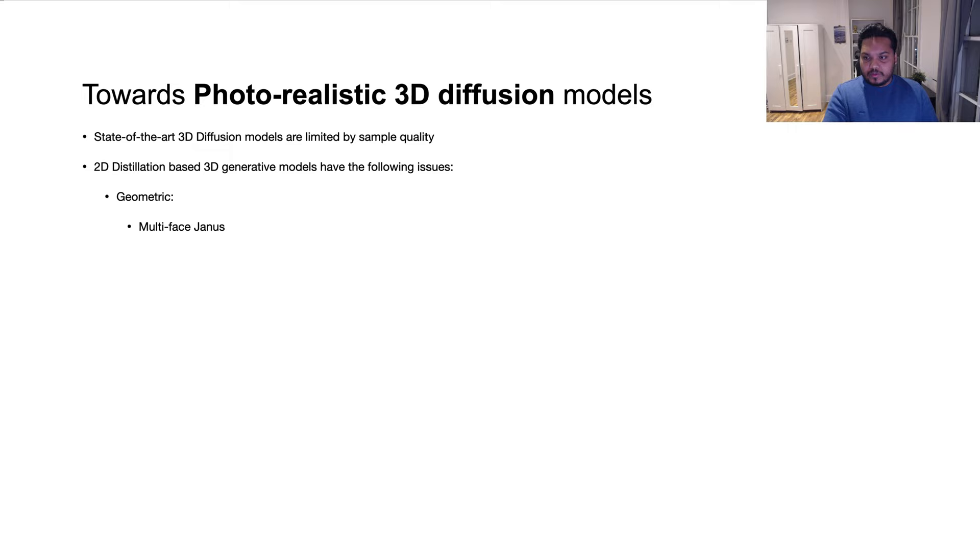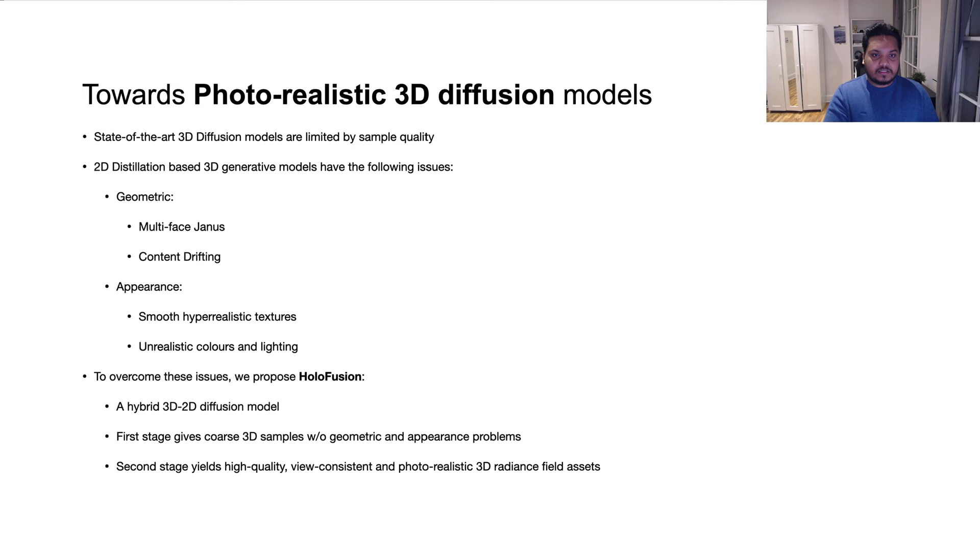To overcome these issues, we propose HoloFusion, which combines the best of both 3D and 2D diffusion approaches. The first stage of our method gives coarse 3D samples, while the second stage distills high-quality 3D-view consistent radiance field assets.